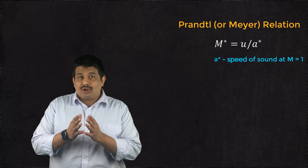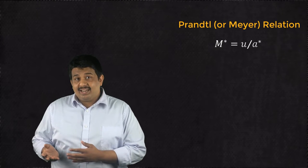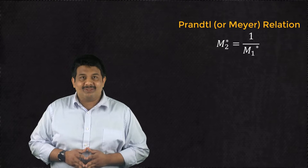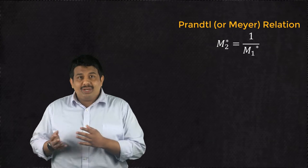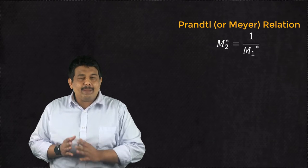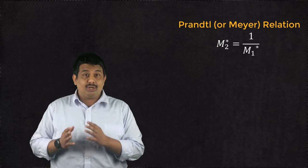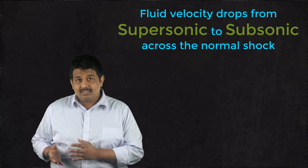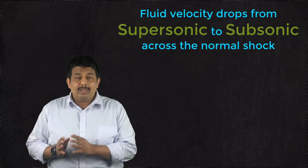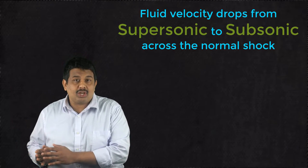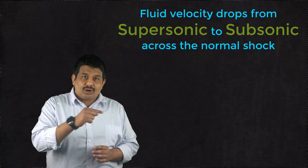Using the definition of Mach number, this relation is rewritten as shown here. The new relationship leads to a very important conclusion pertaining to normal shocks. That is, the fluid velocity must drop from supersonic to subsonic across the shock wave.